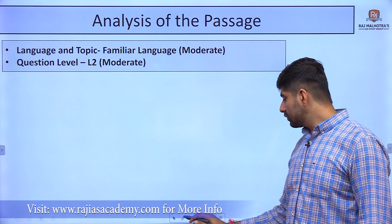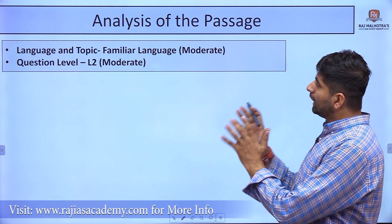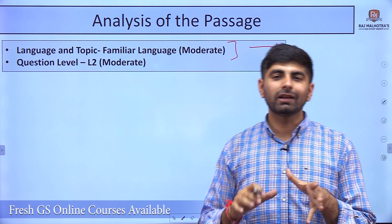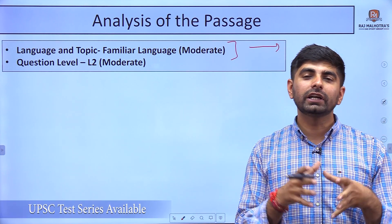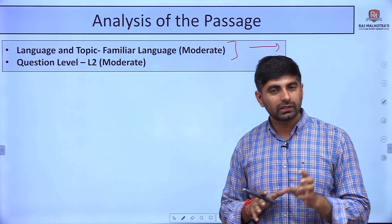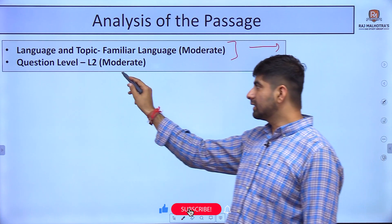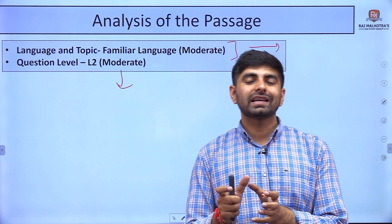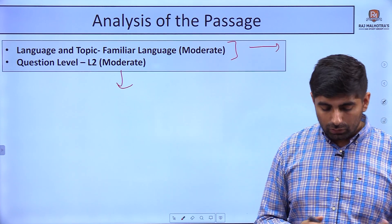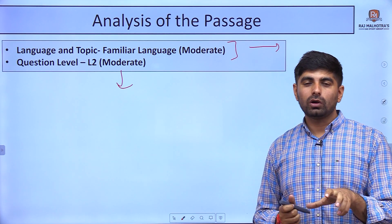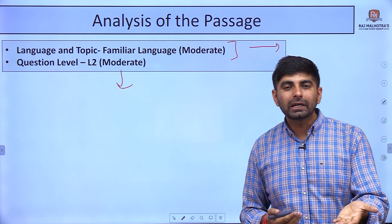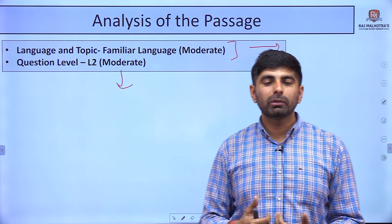Let's check the analysis of the passage. The language and topic were familiar but to a moderate level, because many things were correlated with each other — so I will put this passage language into the moderate section. The question level was also moderate because there were more than 3 statements. If you are not able to solve these comprehension passages and facing some problems, comment below and we will try to help you.